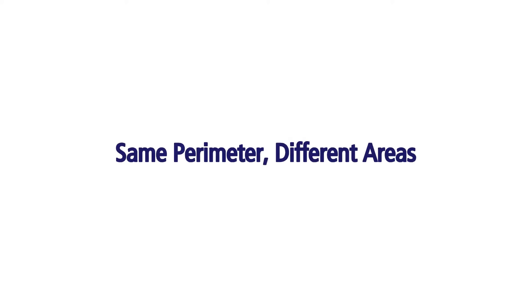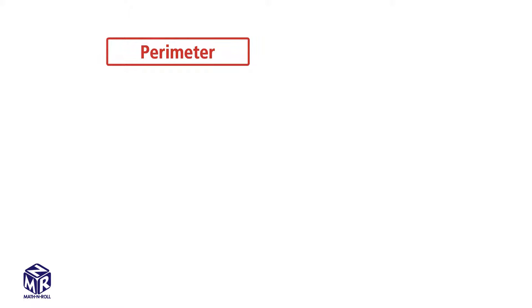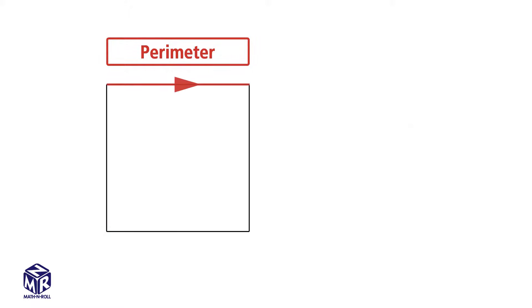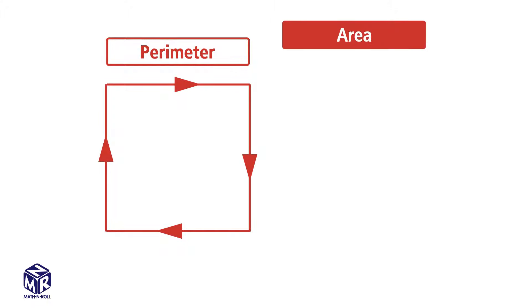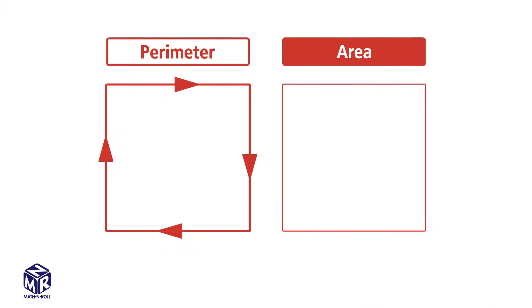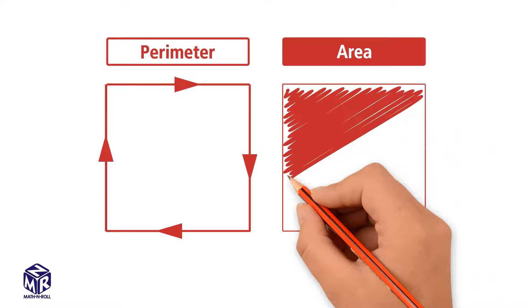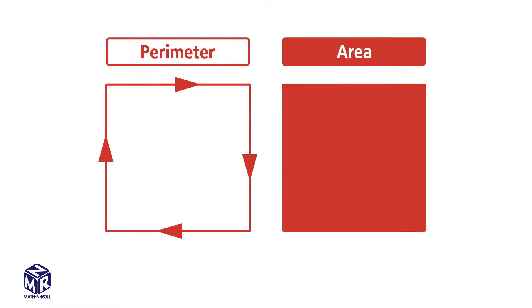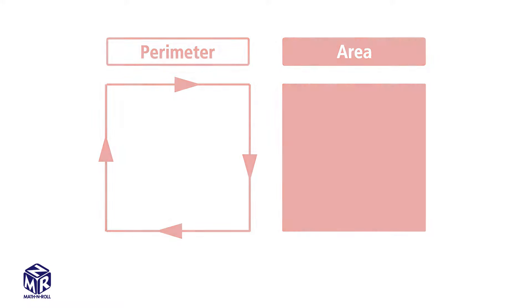Same perimeter, different areas. We already know that the perimeter is the distance around a figure. It's measured in linear units or units. Area tells us the number of unit squares needed to fill a flat surface. Can rectangles have the same perimeter but different areas?